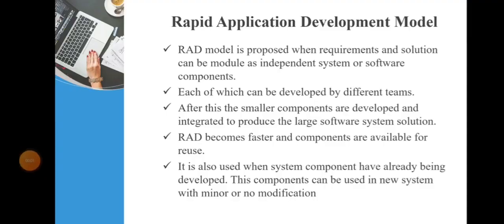Next model we are going to discuss is Rapid Application Development Model, which is also shortly known as RAD Model. RAD Model is proposed when requirements and solutions can be modeled as independent system or software components. This model is achieved by component based construction. So here a fully functional system is developed within a very short time period since the requirements are well understood and the softwares are developed by different teams.